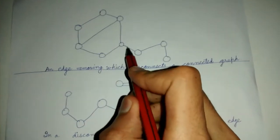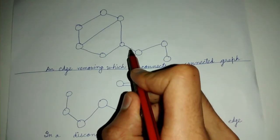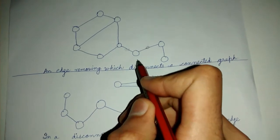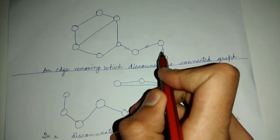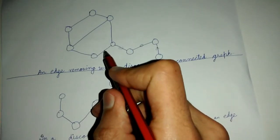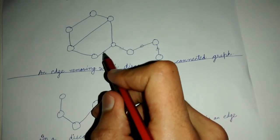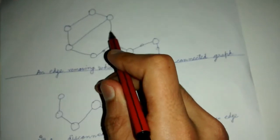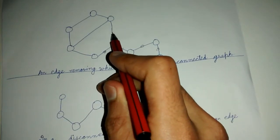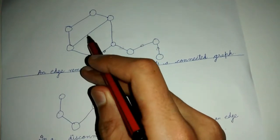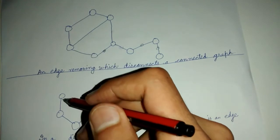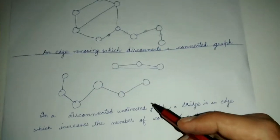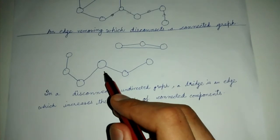So this is a bridge, this is a bridge, this is not a bridge, this is not a bridge — because removing these will not disconnect the graph. This is not a bridge, and so on.